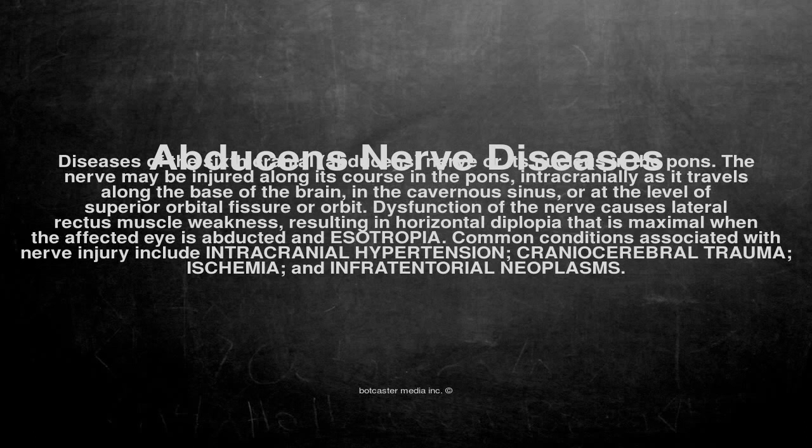The nerve may be injured along its course in the pons, intracranially as it travels along the base of the brain, in the cavernous sinus, or at the level of the superior orbital fissure or orbit.